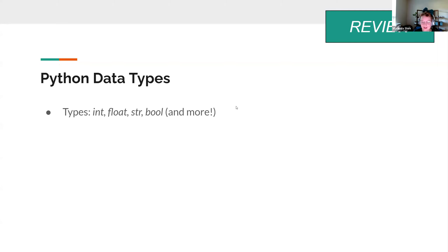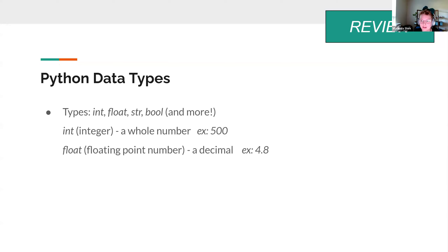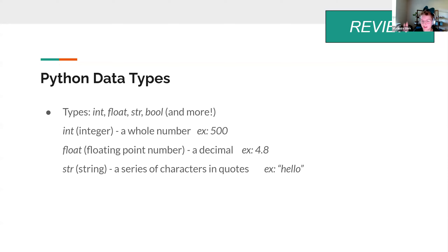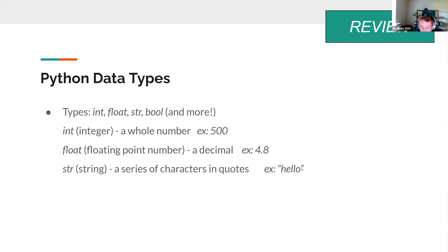So we have integer, float, string, and Boolean. An int is a whole number; a float is a floating point number — a decimal. A string is a series of characters always in quotes. Python won't know it's a string unless you put it in quotes. You can use double or single quotes — just keep it consistent. When I say open a quote, I mean the first one; close means the second one.